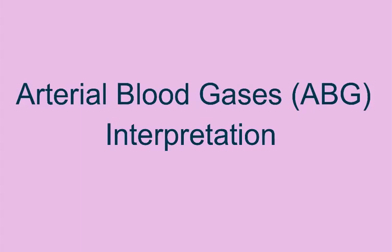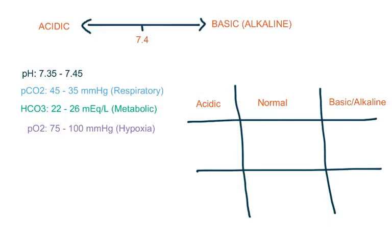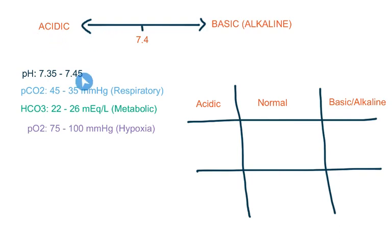Today I'm going to try to teach you arterial blood gas interpretation in a simplified way. Before we begin, you have to know the normal ranges of arterial blood gases. The neutral level of pH is 7.4 and normally it ranges between 7.35 to 7.45. If the pH is less than 7.35 it is on the acidotic side, and if it is more than 7.45 it is on the alkaline or basic side.